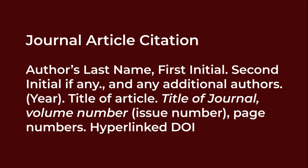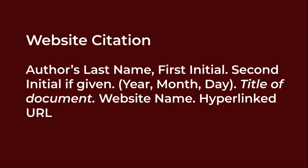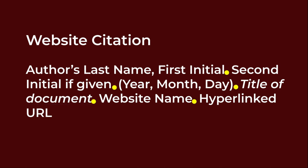For example, if you are citing a journal article, only the title of the journal itself will be italicized — everything else, including the title of the article, will be normal. For a website, the title of the page you are citing is italicized, but the title of the website itself is not. Periods usually denote the end of a section of information, while a comma denotes more information about one piece of information.